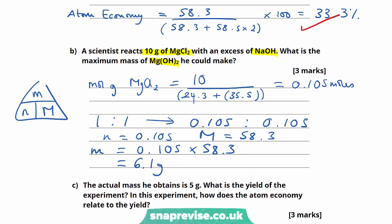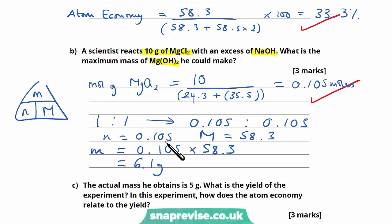This question holds three marks: the first for correctly calculating the number of moles of magnesium chloride, the second for identifying the one-to-one ratio and the moles of magnesium hydroxide, and the third for correctly calculating the maximum mass of 6.1 grams.